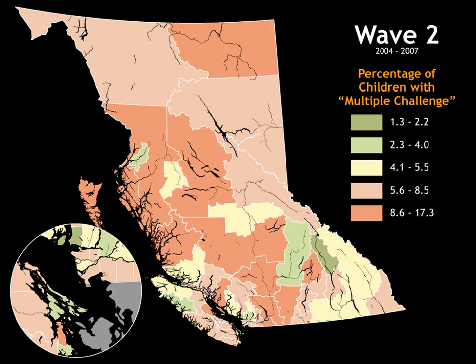By the second wave of the EDI, you can see a brown shift on this map. Like the EDI as a whole, the proportion of children multiply challenged went up across the province, with more brown areas and fewer light green areas. Overall, by wave two, we were up to 6.5 percent. At least one district was as high as 17.3 percent — more than one in six children entering that school district showing multiple complex challenges. In a class of 25 children, that would mean four or five children requiring special attention from the teacher, making it very difficult to keep the pacing of instruction at the level that parents and families want.